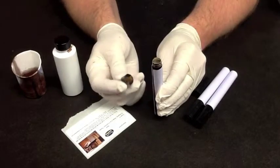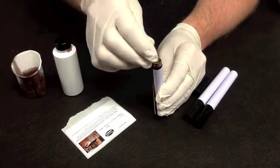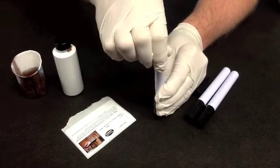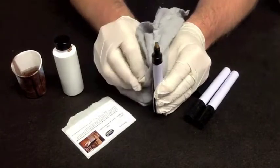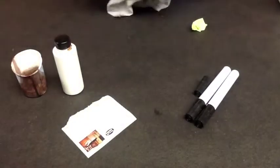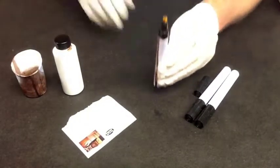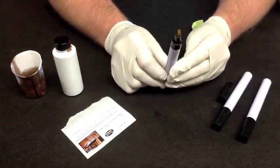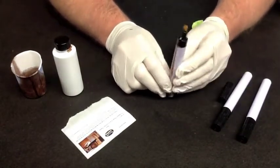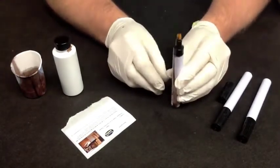We're going to take the cap that has the nib in it and screw it into place. I always like to fill these prior to putting the label on. It can be very messy and that way you can keep your label clean.